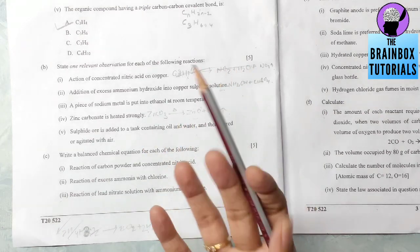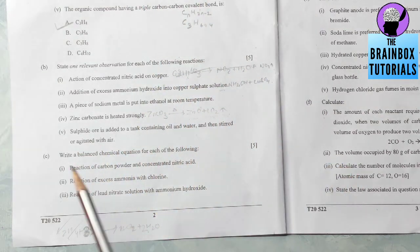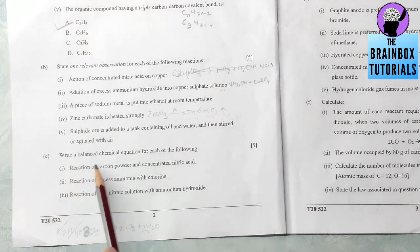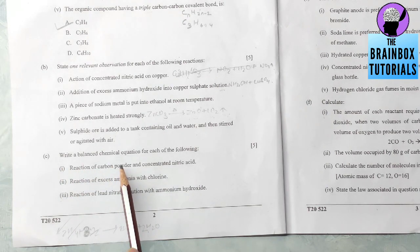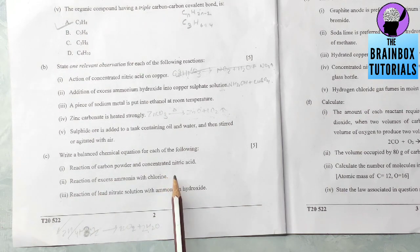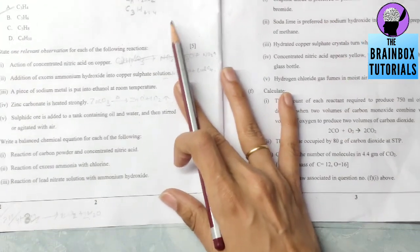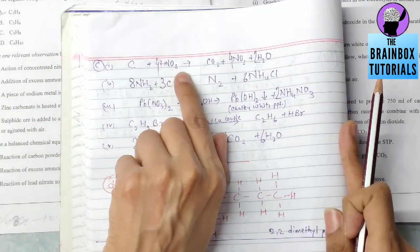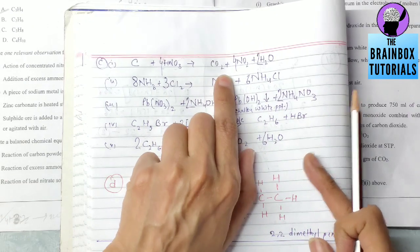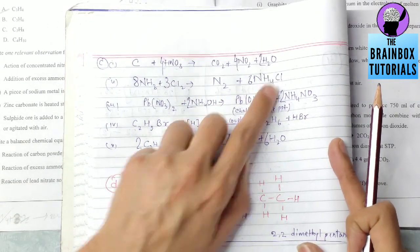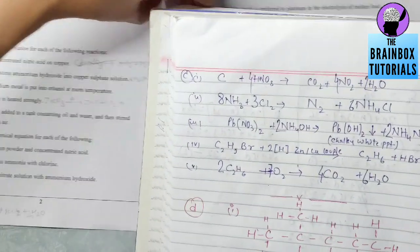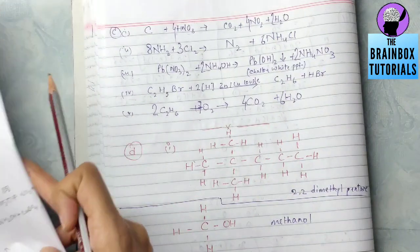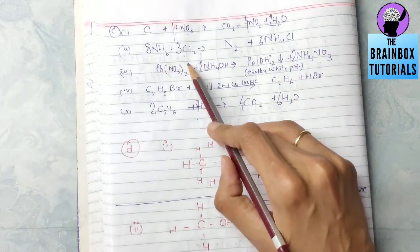Part C: Write a balanced chemical equation for each of the following. First one: reaction of carbon powder and concentrated nitric acid. I have written the reaction here: carbon with HNO3 will make carbon dioxide, NO2, and H2O. Next: reaction of excess ammonia with chlorine. Excess ammonia with chlorine will make nitrogen gas and NH4Cl.